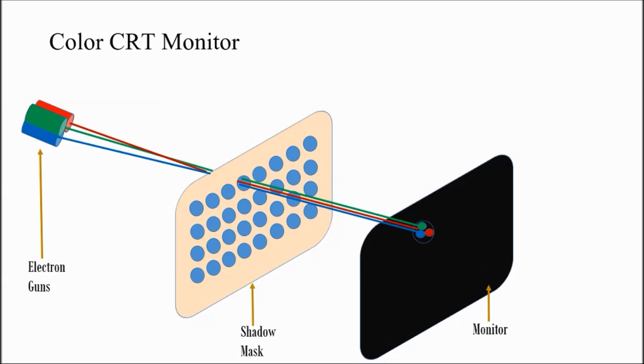The remaining functionality is the same as black and white monitors. The only thing is it has three different color guns: one for red, one for green and one for blue. And there is a shadow mask in between, where each hole is related to a pixel on the monitor.